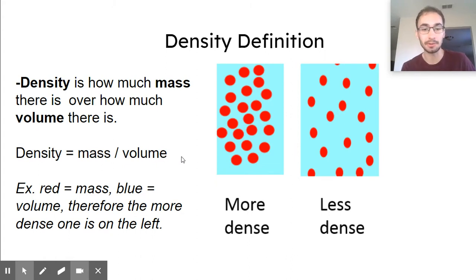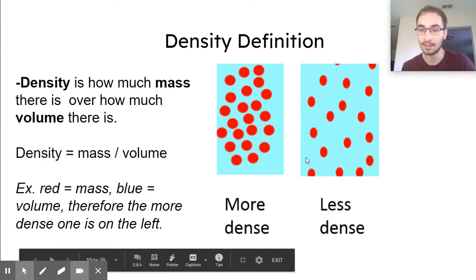You can think of it this way too. If these red atoms are mass and the blue space is the volume, then the one on the left is more dense because there's more mass in less amount of space. So there's more mass less volume so that'll make it more dense than this one on the right.